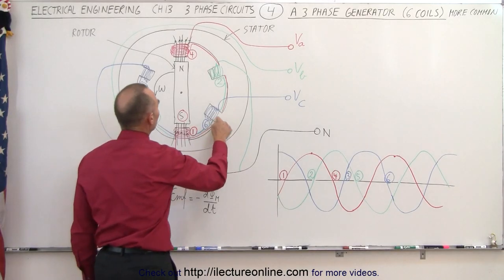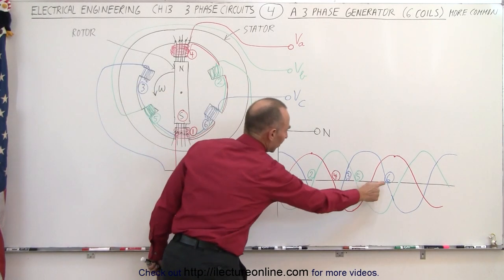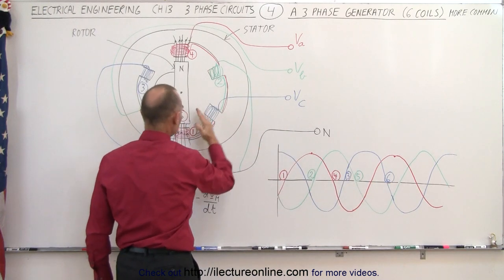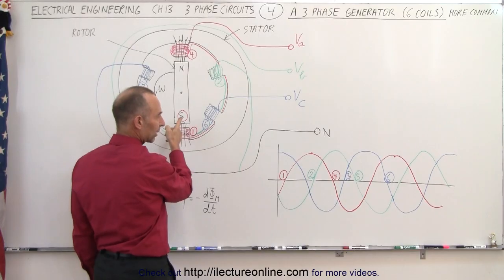And finally, we have the blue coils right here when the south rotor is over here. Notice that's at number six. When the south is over here, we have, let's see, am I doing this correctly here?